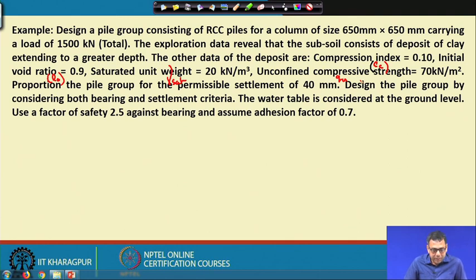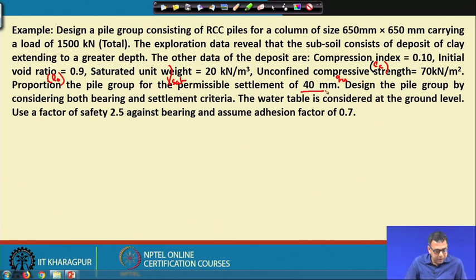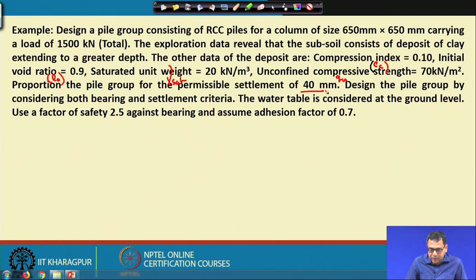We have to design the pile group such that the permissible settlement is 40 mm. Design the pile group considering both bearing and settlement criteria. The water table is considered at ground level; use a factor of safety of 2.5 against bearing and assume an adhesion factor of 0.7.